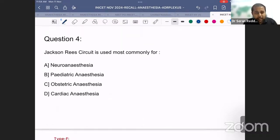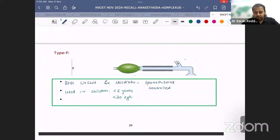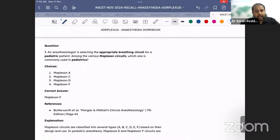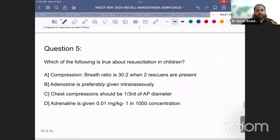Very straightforward question: Jackson Rees circuit is most commonly used for neuroanesthesia, pediatric anesthesia, or cardiac anesthesia? Jackson Rees circuit is nothing but Mapleson F circuit. We know Jackson Rees or JR circuit is most commonly used for pediatric anesthesia, mainly in children less than 6 years or less than 20 kilograms. We discussed this multiple times - Mapleson Type F, best circuit for children for both spontaneous and controlled ventilation, used in children less than 6 years and less than 20 kilos.